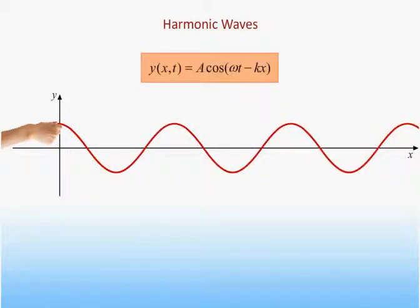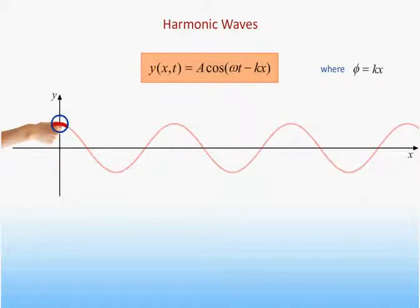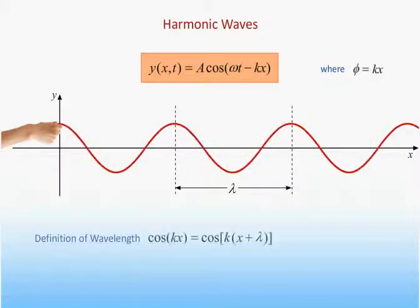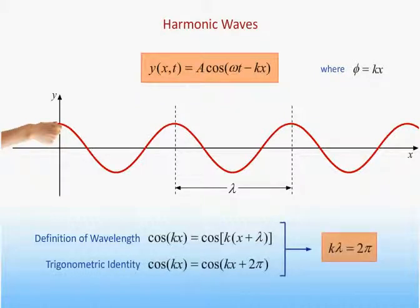Therefore, we can write an expression that works for all points on the string by setting phi equal to k times x, where x is the distance of the point from the end of the string and k is a constant called the wave number. If we freeze the wave at any given time, we see the shape of the wave repeats itself over and over as we move along the x-axis. The distance it takes for the pattern to repeat itself is called the wavelength, and we denote it by the Greek letter lambda. Since a cosine repeats whenever its argument is increased by 2 pi, we can obtain the relationship between the wavelength and the wave number by setting k lambda equal to 2 pi.